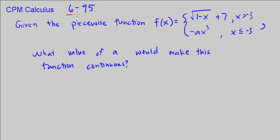This is CPM Calculus, Chapter 6, Number 95. We are given this function f of x. It has two pieces. And we want to find the value for a which would make this function continuous.